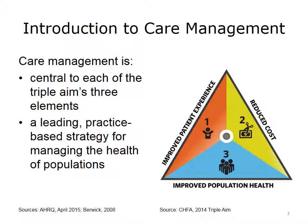Health care delivery systems throughout the United States are working toward the triple aim as a framework to transform health care delivery. The triple aim consists of improving the experience of care, improving the health of populations, and reducing per capita costs of health care. To meet the triple aim and achieve the goals of health care reform, the health care industry is working to effectively treat patient populations while decreasing health risks and health care costs.